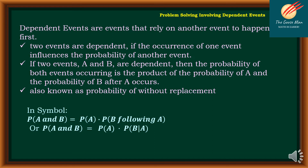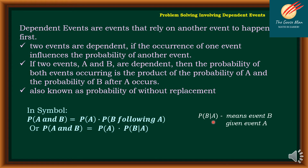In symbol, the probability of A and B is equal to the probability of A times the probability of B following A. Or, the probability of A and B is equal to the probability of A times the probability of B given event A. This symbol means event B given event A.